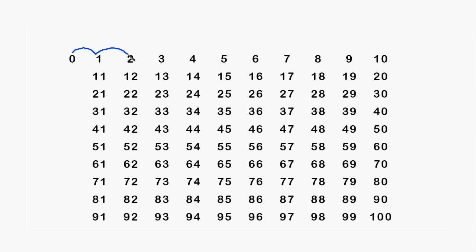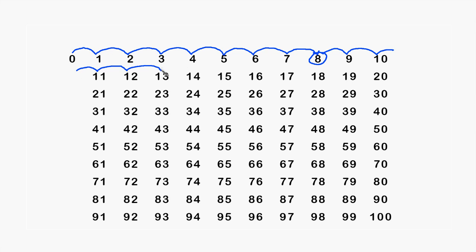You can do skip counting yourself with a pen and a piece of paper. You can draw arrows to represent the bounces and circle every eighth number.